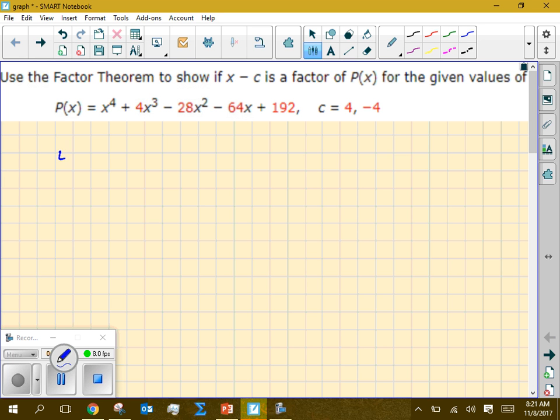First thing you're going to do is put your value of c that you're trying to divide by in that box. We put our coefficients down. Make sure you don't skip any. So we've got 1, 4, negative 28, negative 64, and positive 192. That's all my coefficients for this polynomial. If you skip a power or an exponent, make sure you put a zero in there so everything aligns correctly when you start doing your synthetic division.